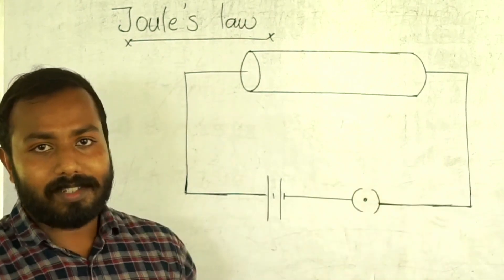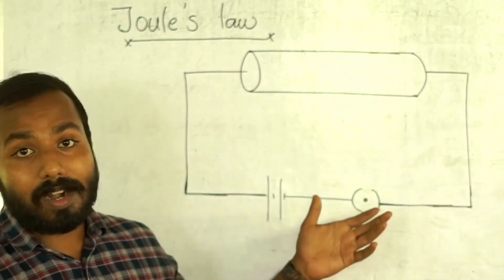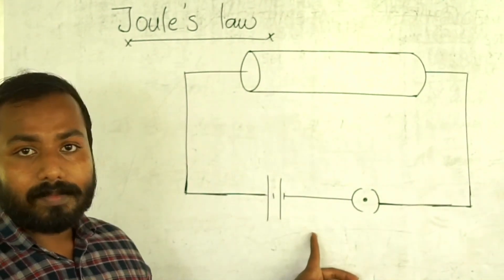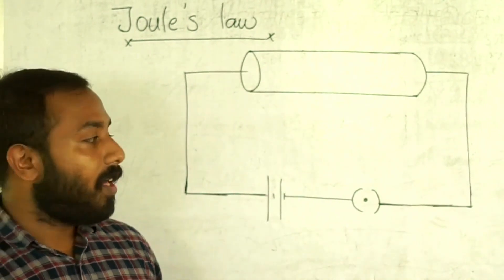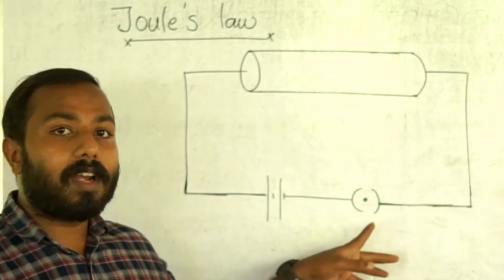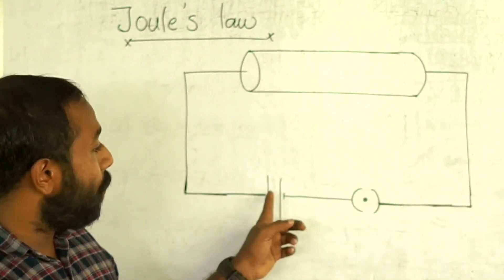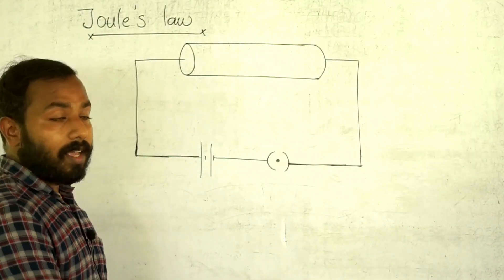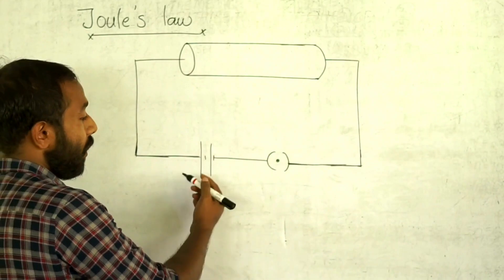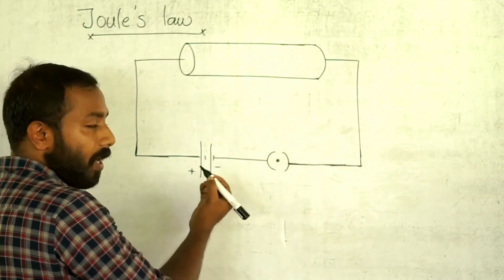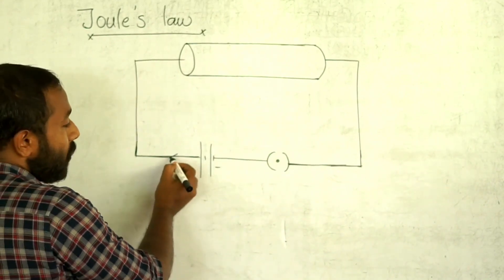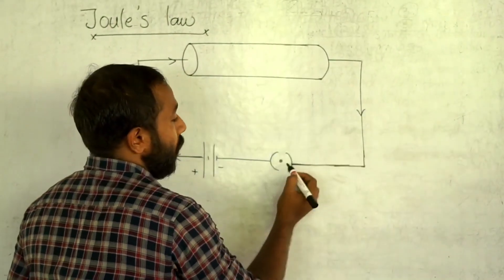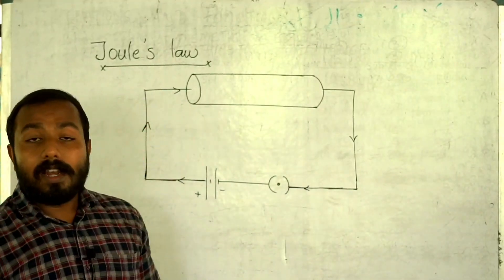I am going to introduce this circuit. We have a conductor, two cables, and a key. Let's start this setup. We are going to let current enter — how does the current flow? The current flows from positive to negative.